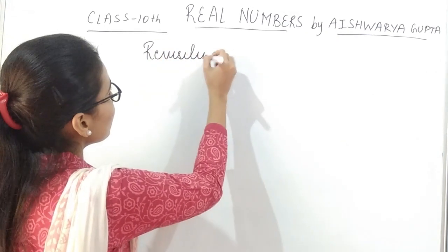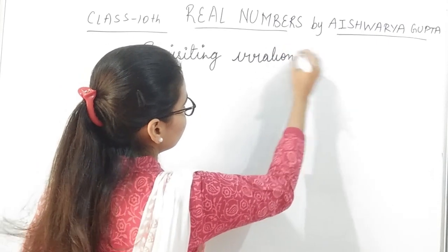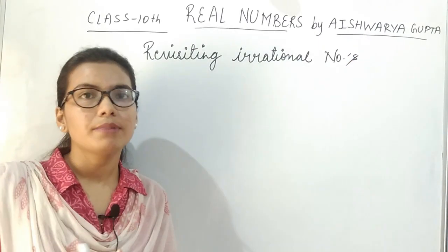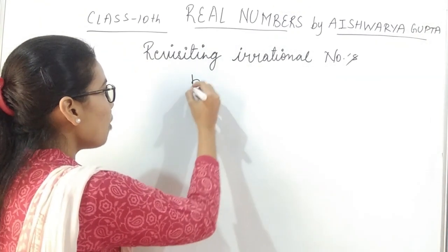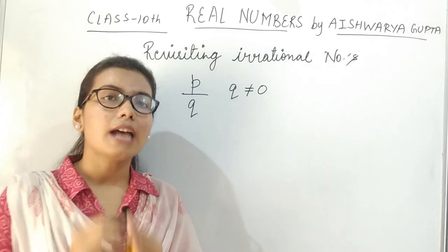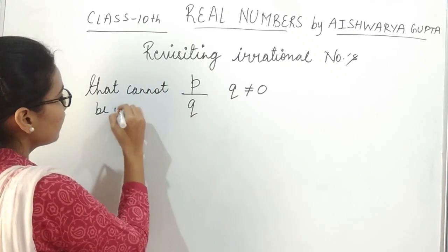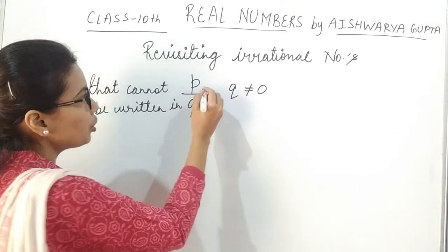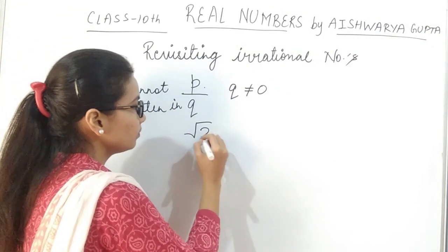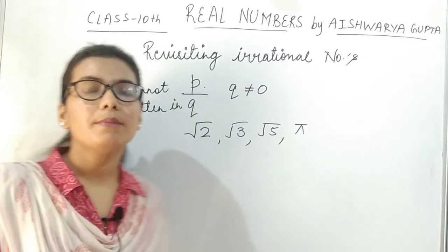Today we will be revisiting Irrational Numbers. What are Irrational Numbers? All the numbers which cannot be written in the form P upon Q, where Q is not equal to 0, are known as Irrational Numbers. For example, root 2, root 3, root 5 — these are some irrational numbers.